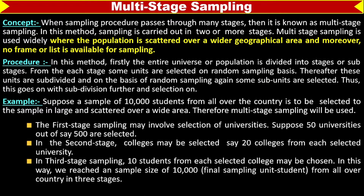Since students are spread in a wide geographical area, it is not possible to take random samples directly. Instead, we take random samples from different stages. For example, 50 universities out of 500 are selected. In the second stage, colleges may be selected — say, 20 colleges from each selected university. In the third stage of sampling, 10 students from each selected college may be chosen.